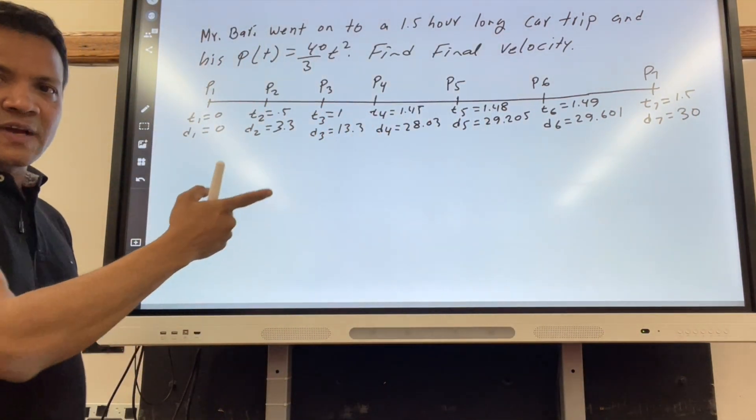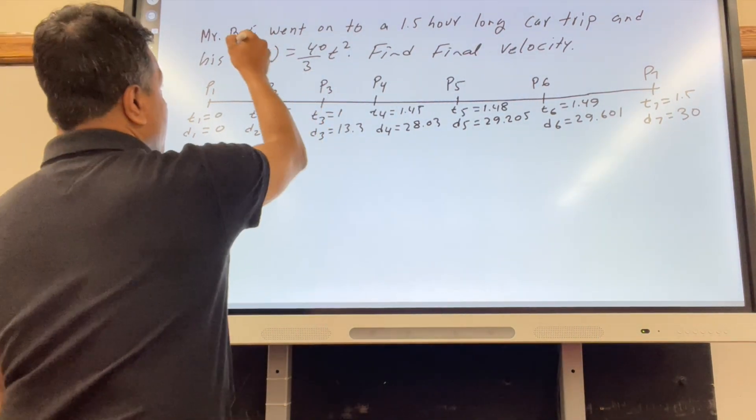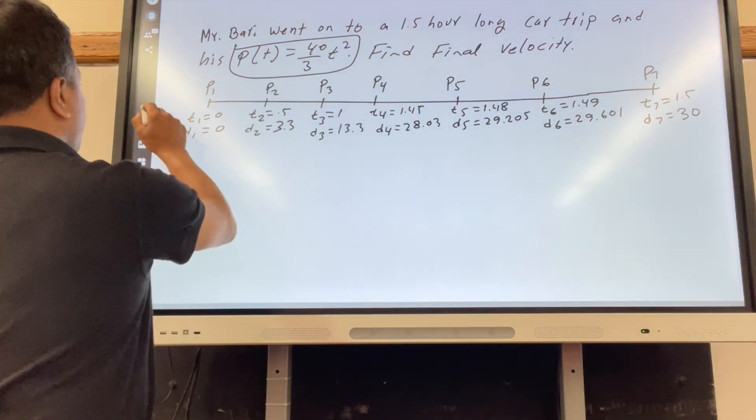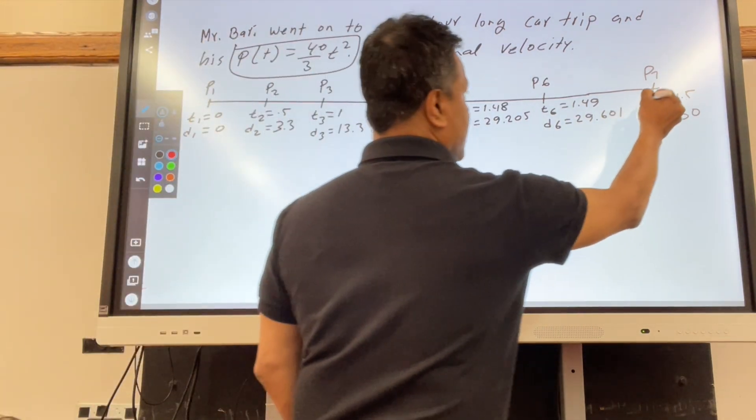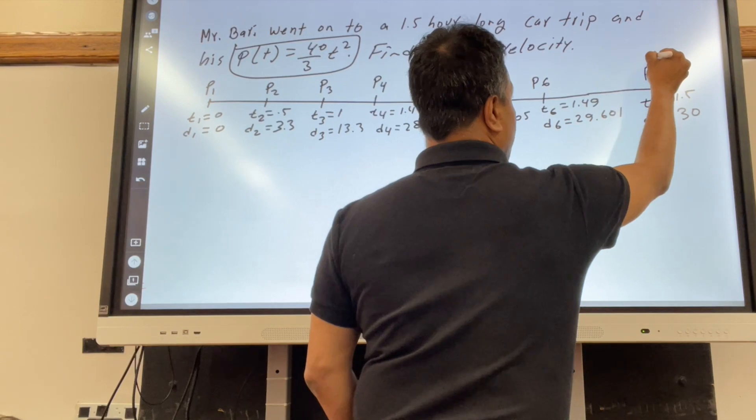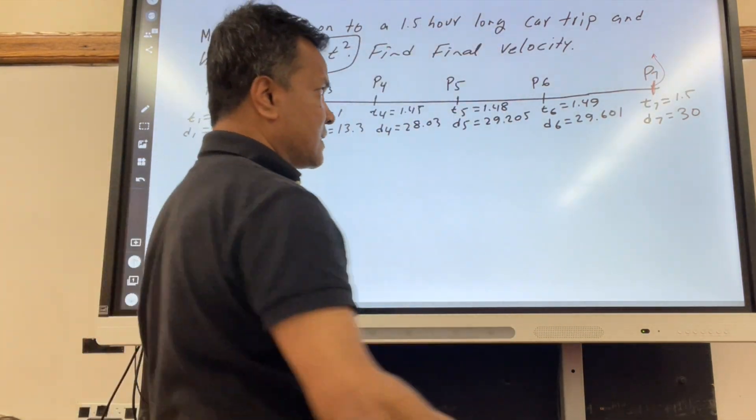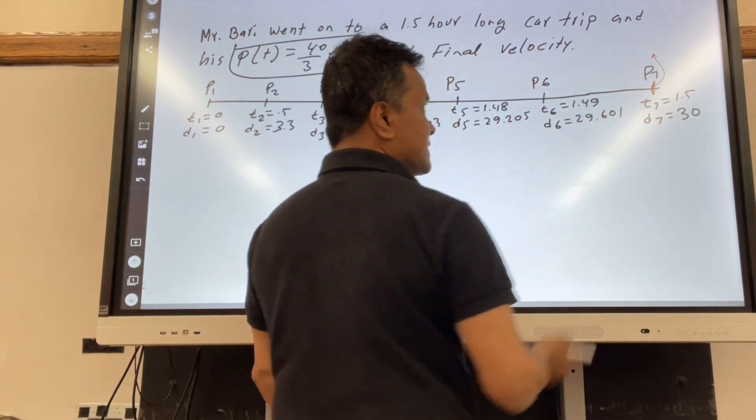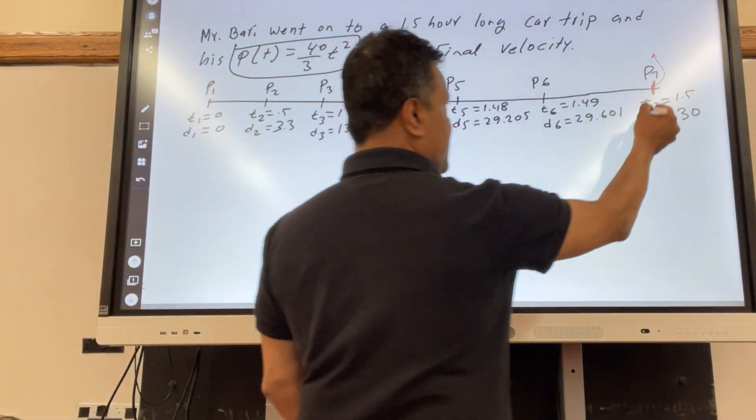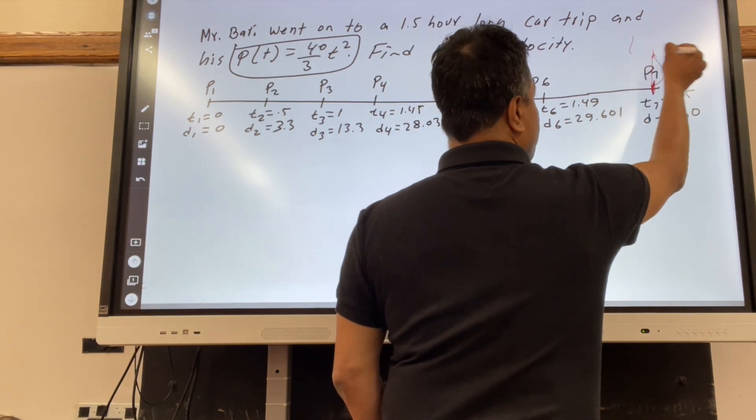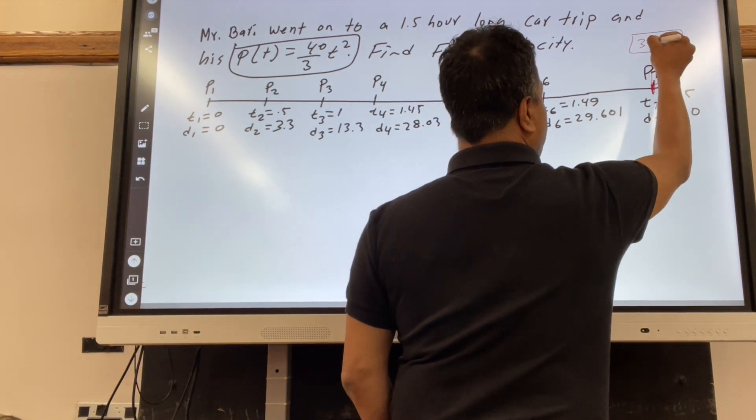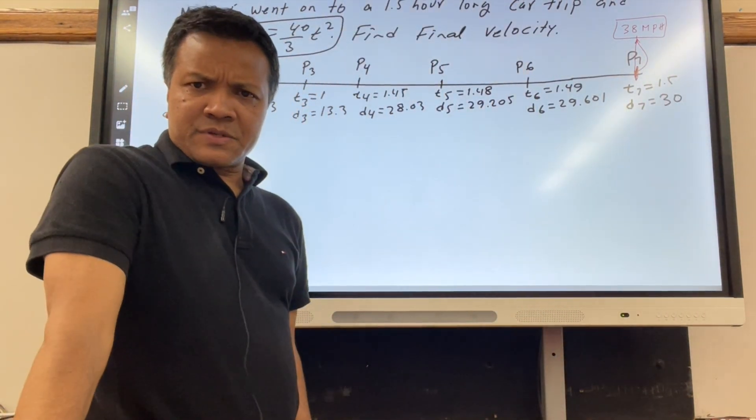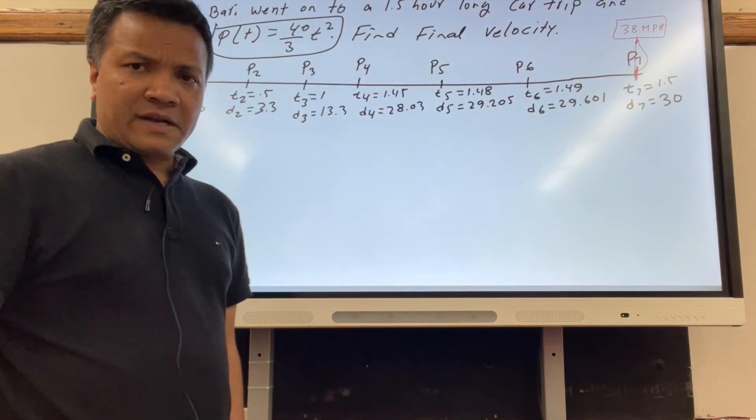I found those values using the position function. Velocity final means the velocity right here - not the average velocity, but instantaneous velocity at that point. If there is a speed limit sign of 38 miles per hour, did Mr. Berry break the law? That is what we are going to find out.